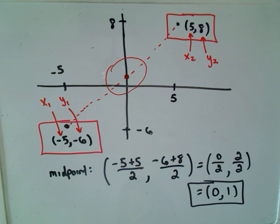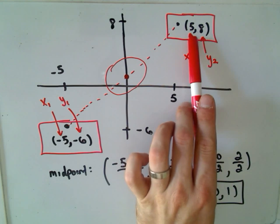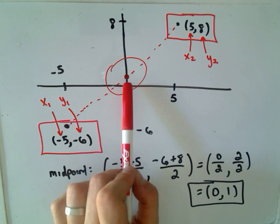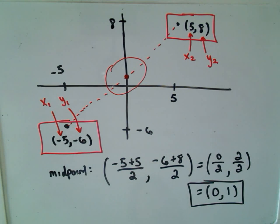And notice in this case as well, things are kind of symmetric. We're at negative 5. We're at positive 5. So we're 5 units to the right of the y-axis, 5 units to the left of the y-axis. The midpoint should be 0 units away from the y-axis, which would correspond to an x-coordinate of 0.